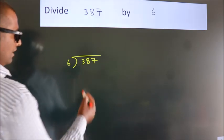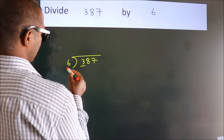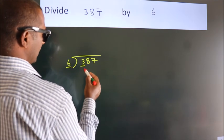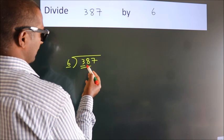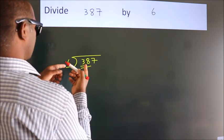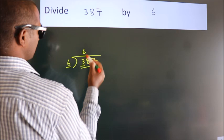Next, here we have 3, here 6. 3 is smaller than 6, so we should take two numbers, 38. A number close to 38 in the sixth table is 6 times 6 equals 36.